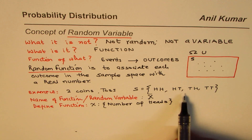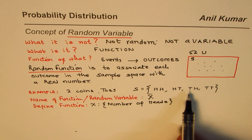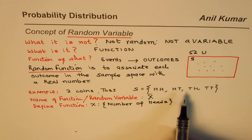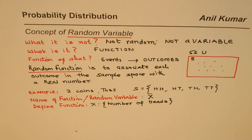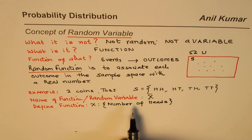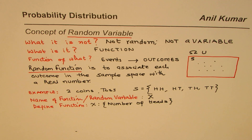Whatever event you are working with, you can analyze that event further with the help of random variables or random functions. That's the whole idea — to take it to the next level. Till now we have calculated probabilities for single events; now we will look at the group as a whole. That is the whole idea of probability distribution.